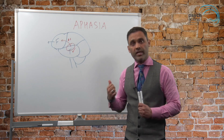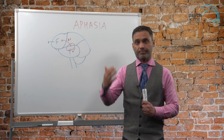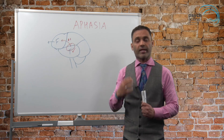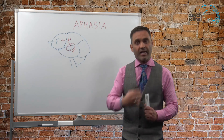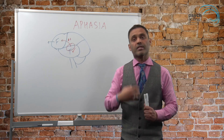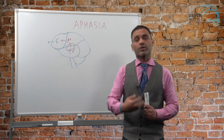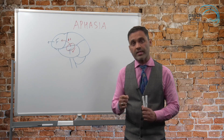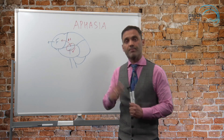Compare it to Wernicke's, where speech is absolutely fluent but comprehension is affected. In Broca's aphasia, comprehension is fine but they can't actually express it. So Broca's aphasia is known as expressive aphasia or non-fluent aphasia. Let's have a look at Broca's aphasia in this video.